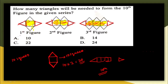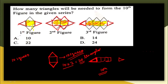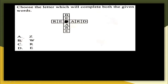With 10 squares and 2 triangles per square, that gives 10 × 2 = 20 triangles. Adding the 2 side triangles, the total is 20 + 2 = 22 triangles. The correct answer is option C: 22.